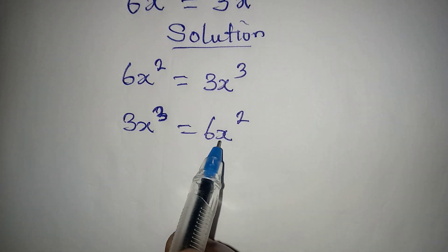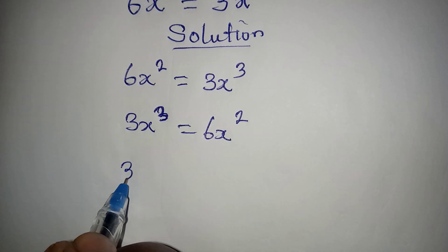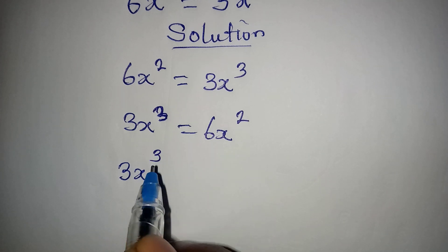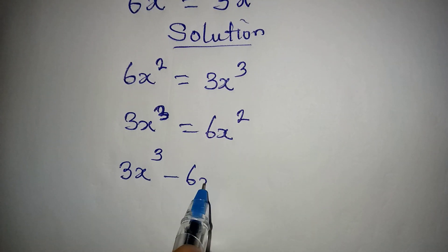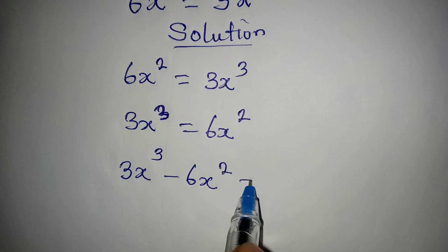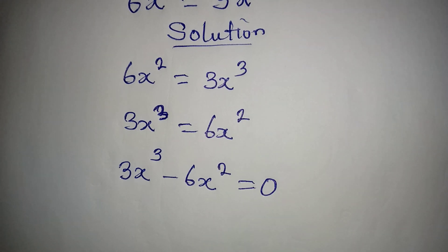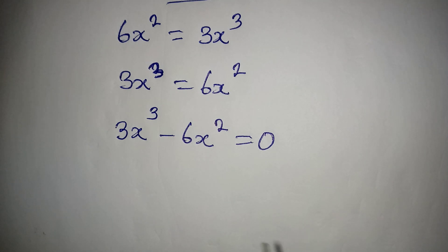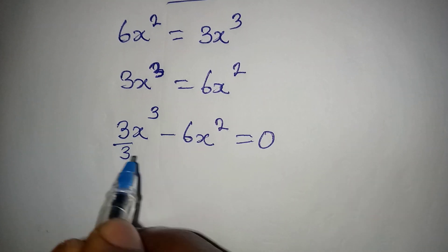Then we will bring this to the left as we have 3x to the power of 3 minus 6x to the power of 2 equals 0. And by the way, from here we can divide everything by 3.